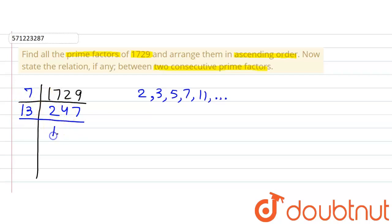We get 13 multiplied by 19 is 247. Now 19 is itself a prime number, so we can write 19 multiplied by 1 equals 19. Now we've reached a stage where we have 1.